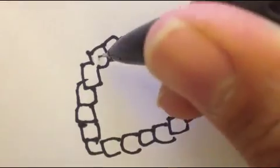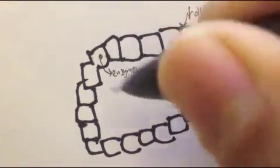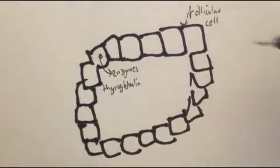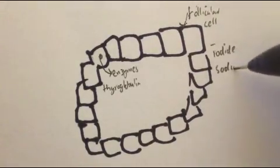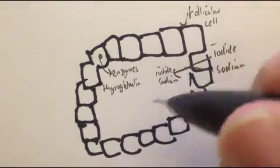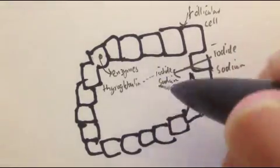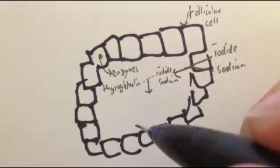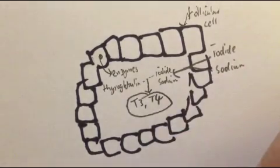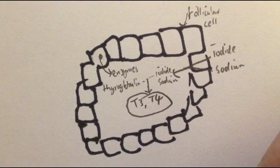Follicular cells synthesize enzymes and thyroglobulin involved in the production of T3 and T4, which enter the lumen. Iodide is co-transported along with sodium into the colloid lumen. Enzymes add iodide to thyroglobulin to make T3 and T4. Free T3 and T4 enter the circulation via the follicular cells after being released from thyroglobulin molecules.